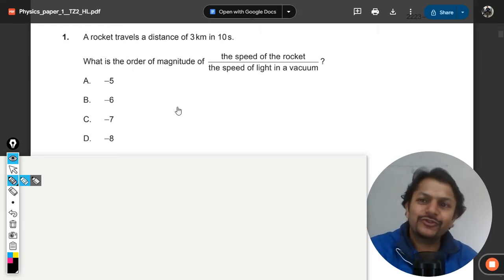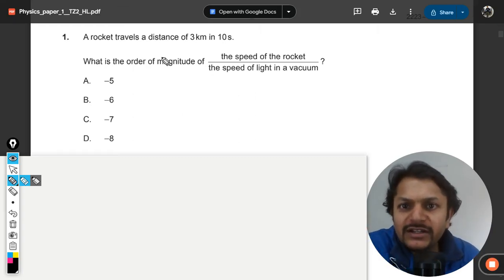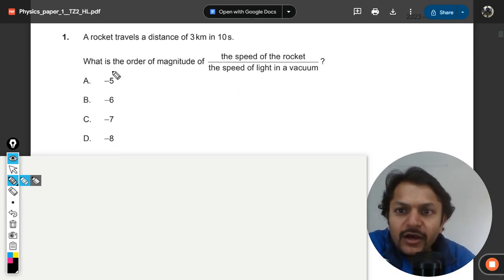Okay dear student, let us see what is there in this question. A rocket travels a distance of three kilometers in 10 seconds. What is the order of magnitude of the speed of the rocket divided by the speed of light in vacuum?